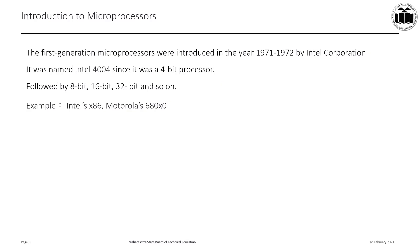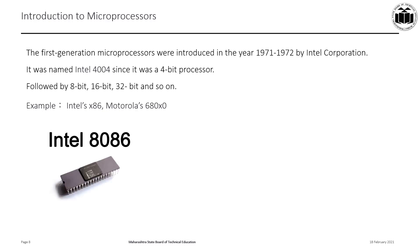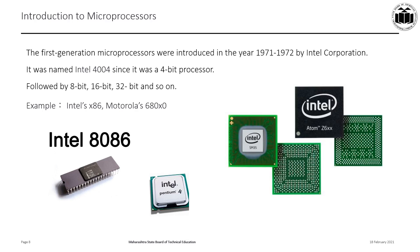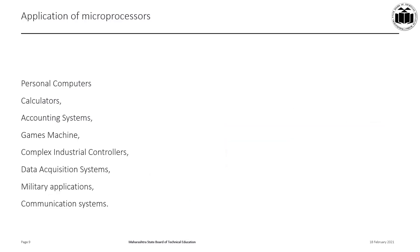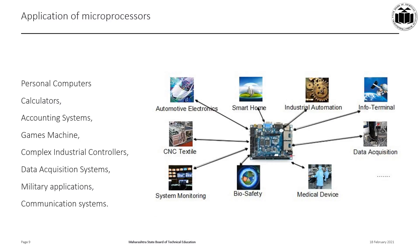The first microprocessor developed was Intel's 4004, which was only 4-bit. It was followed by the 8008 and 8080, which were 8-bit microprocessors. The first commercially successful microprocessor was Intel's 8085, also 8-bit, followed by 16-bit, 32-bit, 64-bit, and so on. Examples include the Intel 8086, Intel Pentium 4, and other Intel series processors. Applications of microprocessors include personal computers, calculators, accounting systems, data acquisition systems, military applications, and communication systems.